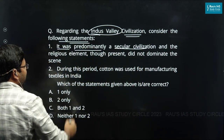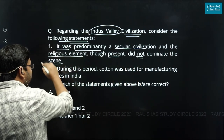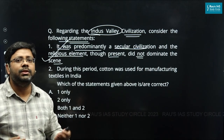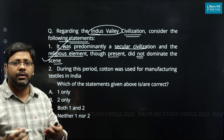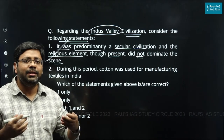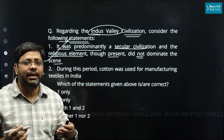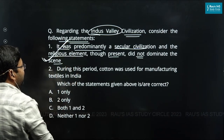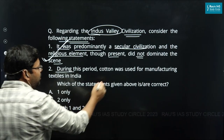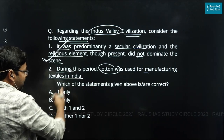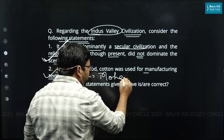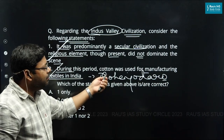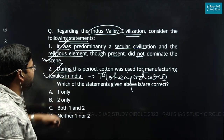The next question on the Indus Valley Civilization has two statements. First, it was predominantly a secular civilization where religious elements, though present, did not dominate — this is correct, as we have no evidence of temples or a priestly ruling class. Second, cotton was used for manufacturing textiles — also correct, as evidence of cotton clothes has been found from Mohenjo-daro in Sindh, Pakistan.